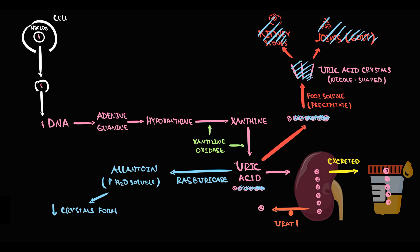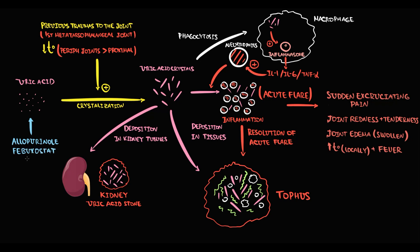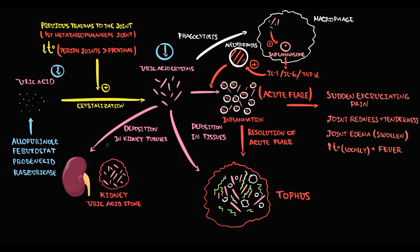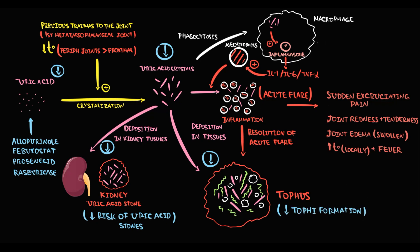The more water-soluble the molecule, the lower the precipitation rate and the slower the rate of crystal formation. More water-soluble molecules are also more rapidly excreted by the kidneys. So allopurinol, febuxostat, probenecid, and rasburicase all decrease the concentration of uric acid in the blood. The lesser the uric acid, the fewer crystals, reducing the risk of kidney stones and tophus formation. With decreasing uric acid crystal concentration, the probability of inflammasome activation decreases, and without inflammasome activation, acute flare will not develop.